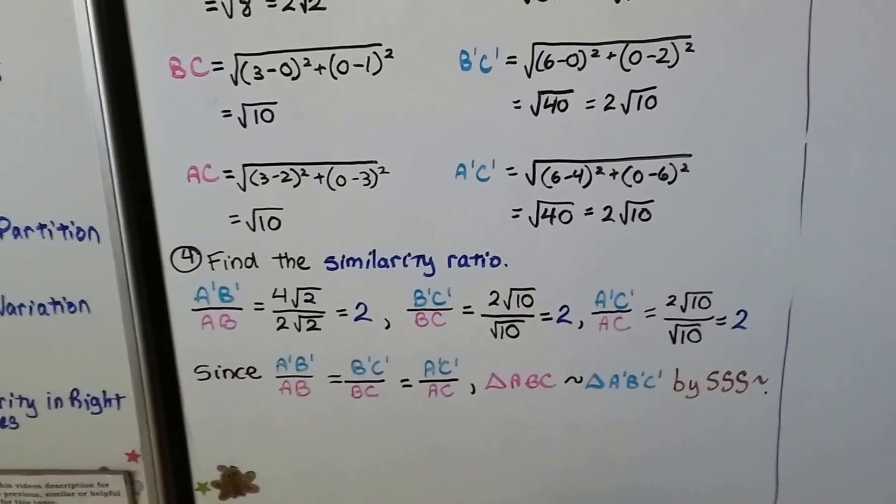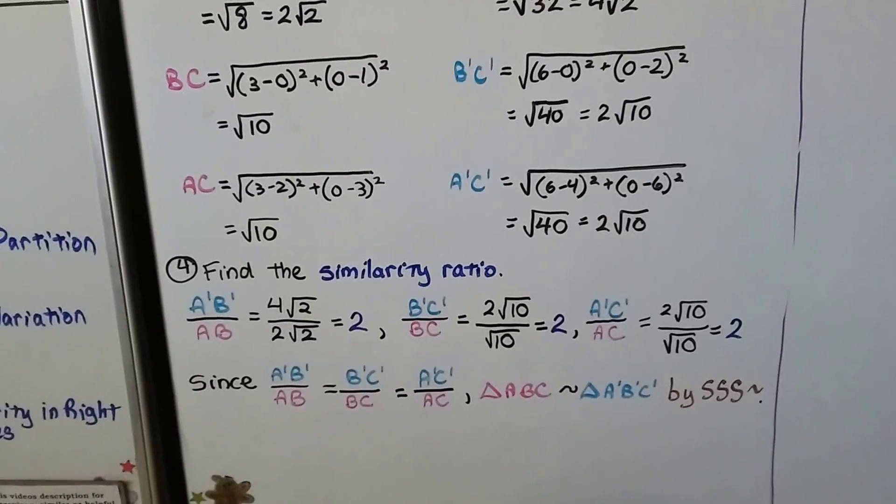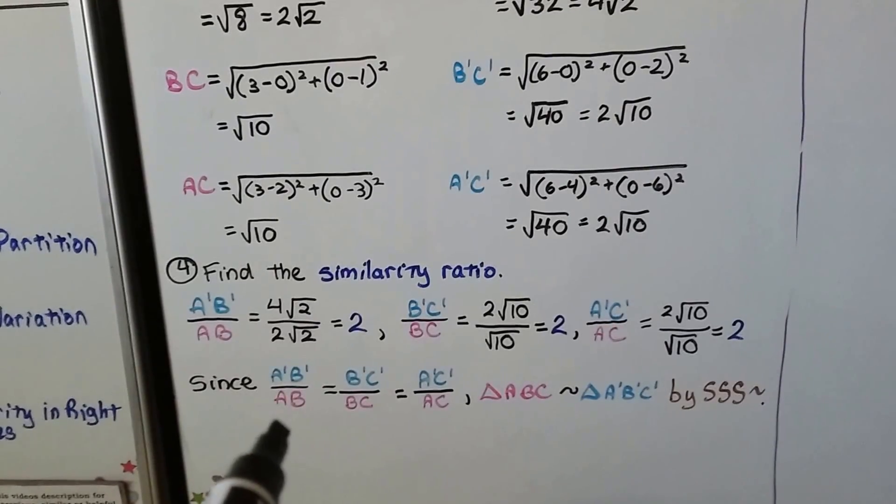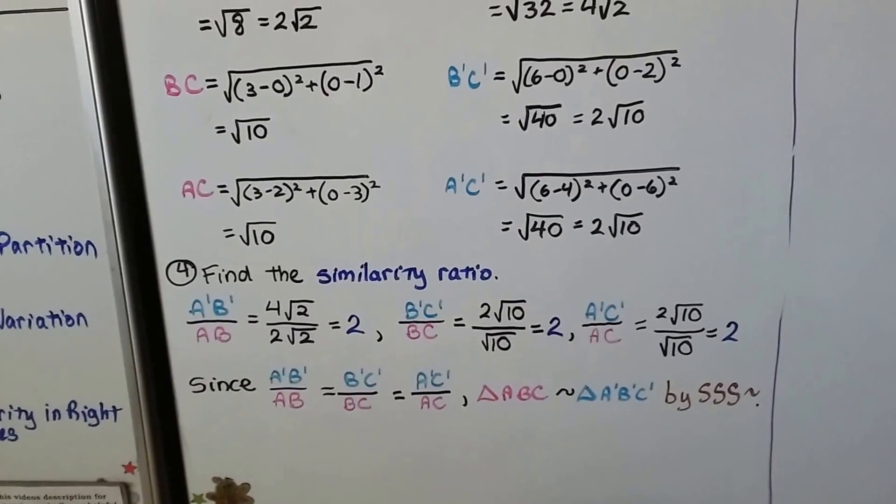Triangle ABC is similar to triangle A'B'C' by side, side, side. This side is similar to this one, this is similar to this one, this is similar to this one.